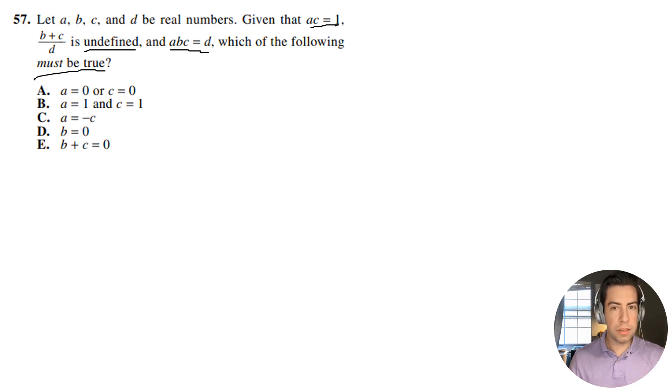Okay, so let's start out with something interesting that they give us. First of all, one of these answer choices has to be true, so you have to prove it. Now, the interesting thing they tell us is that B plus C divided by D equals undefined. So what that means is that D has to equal zero, by definition, because you only get undefined when you divide by zero.